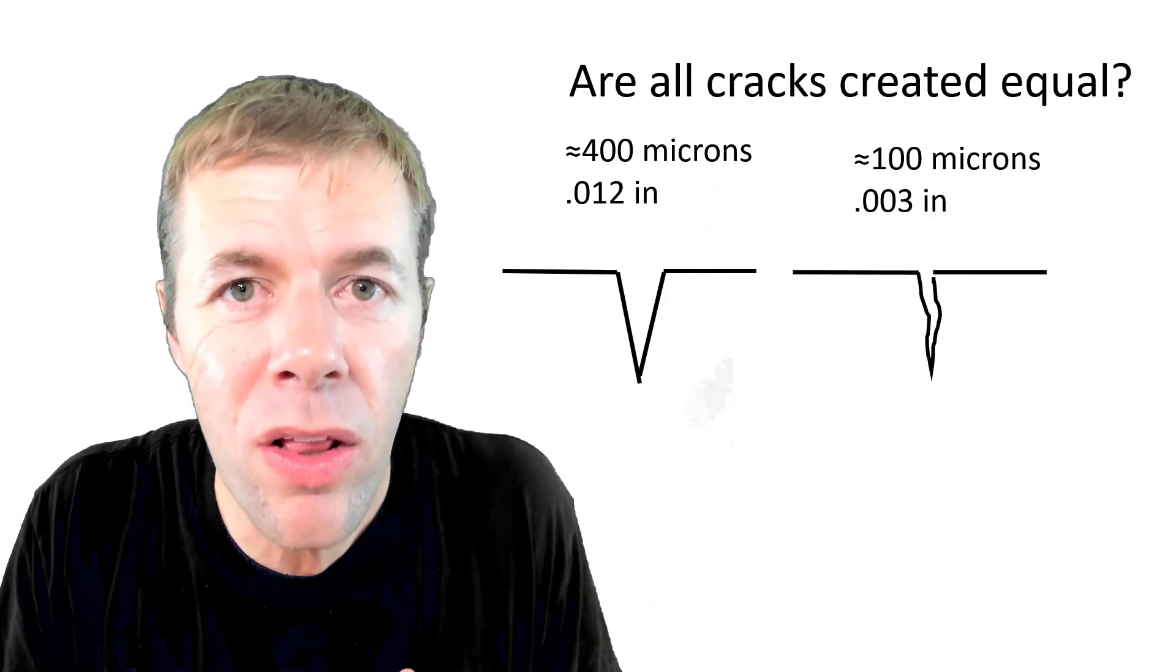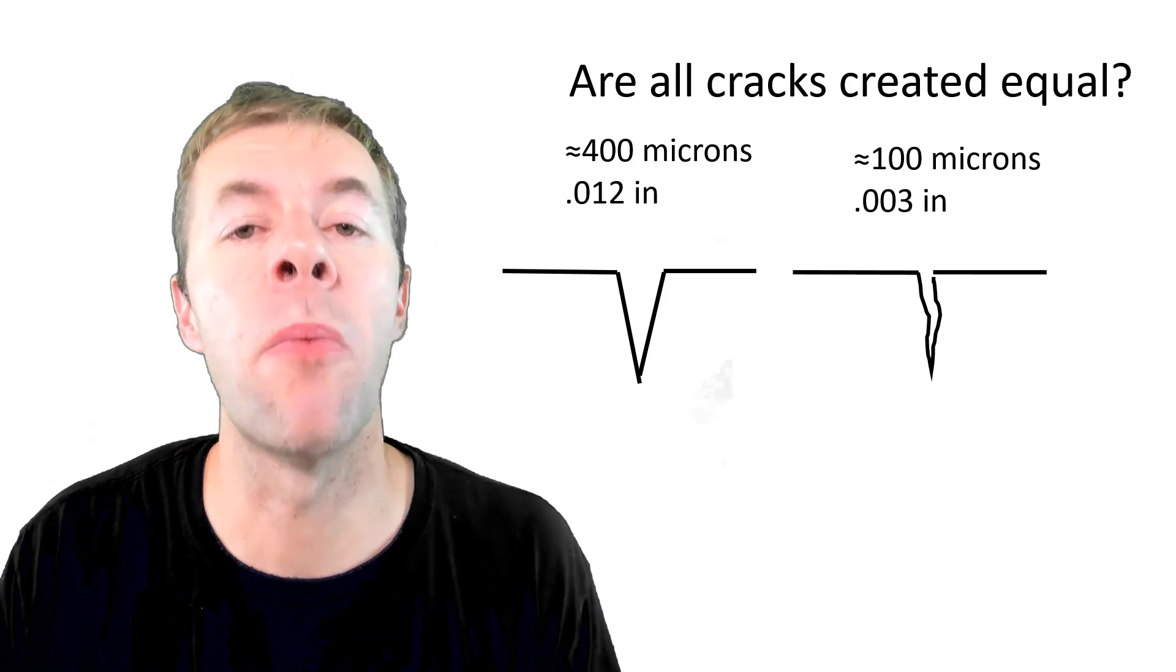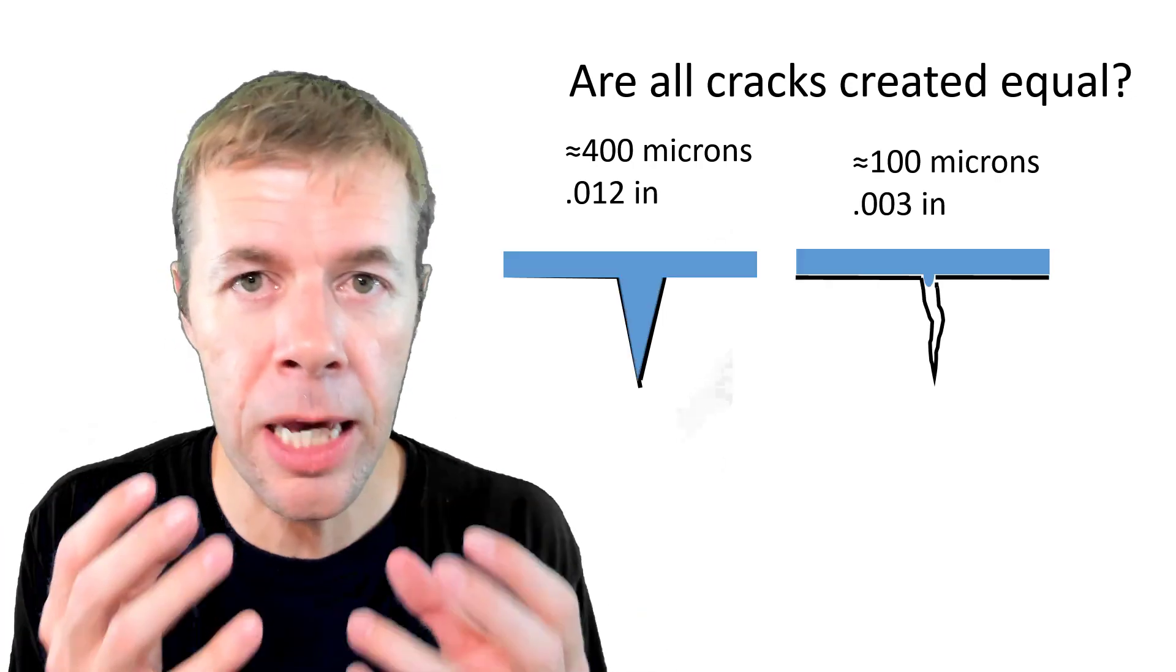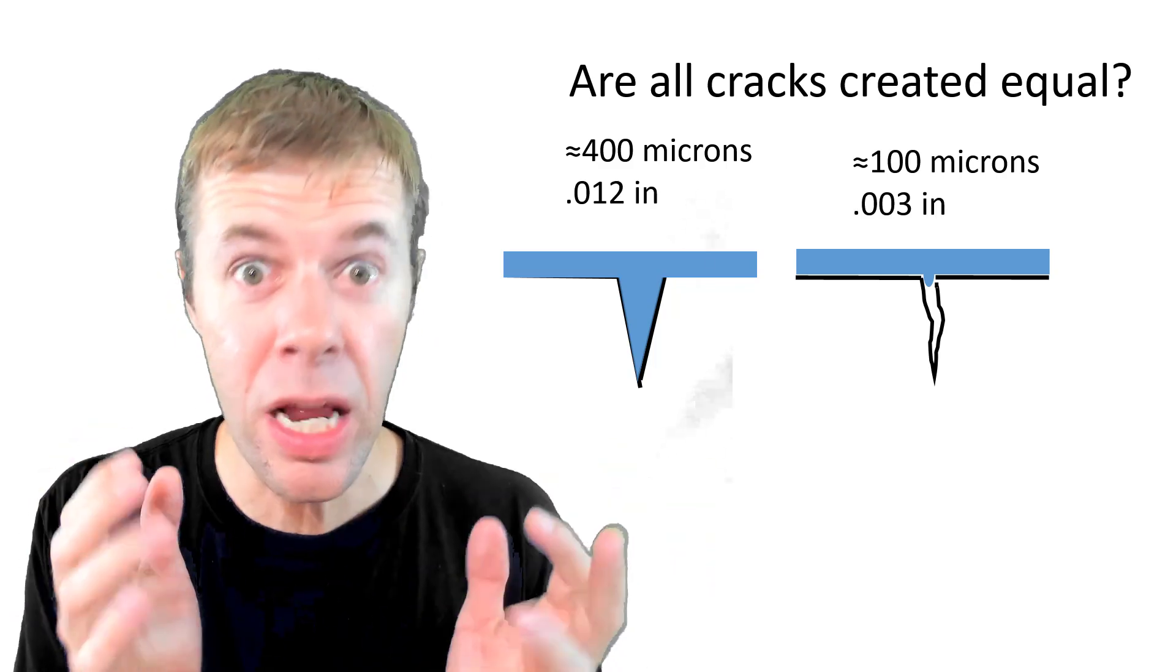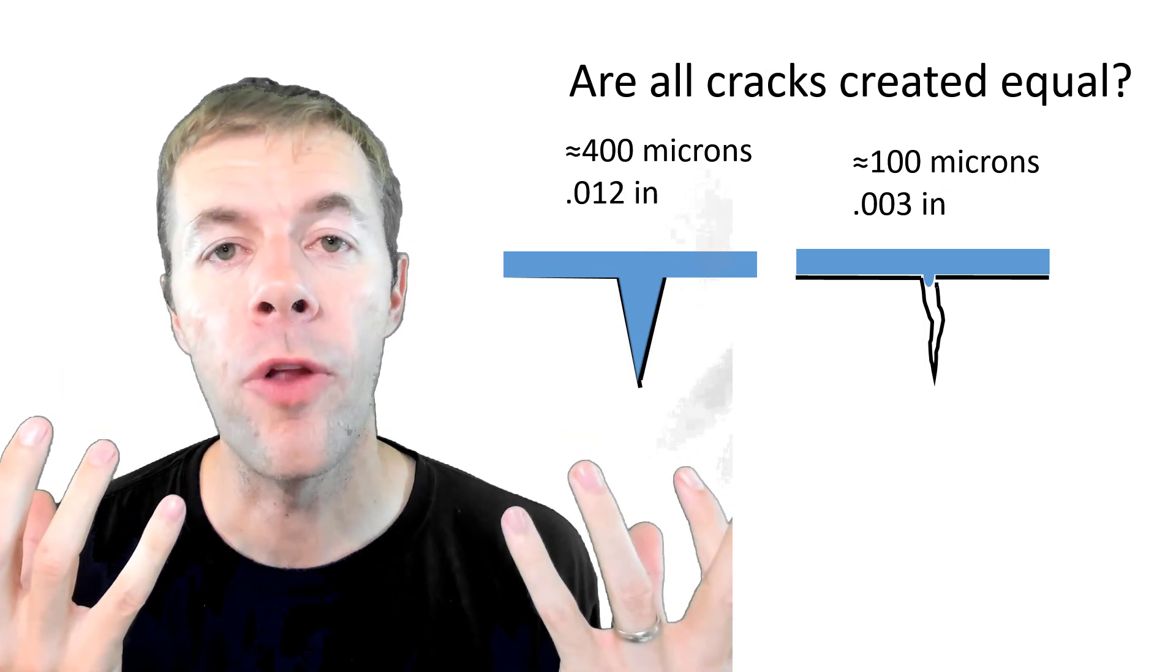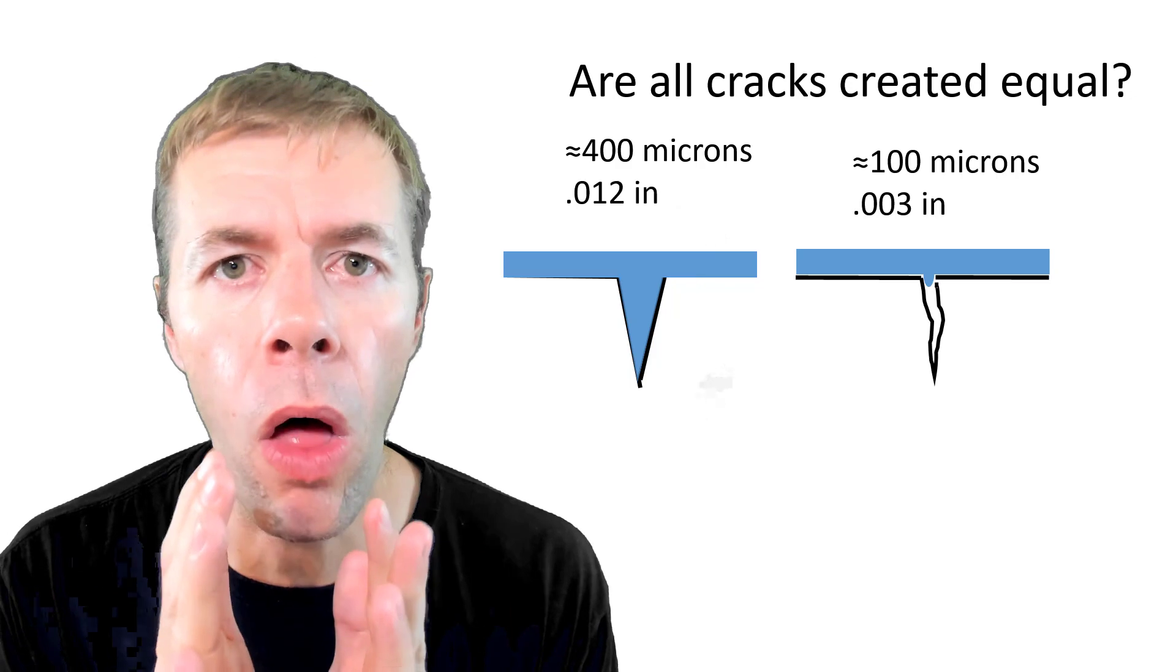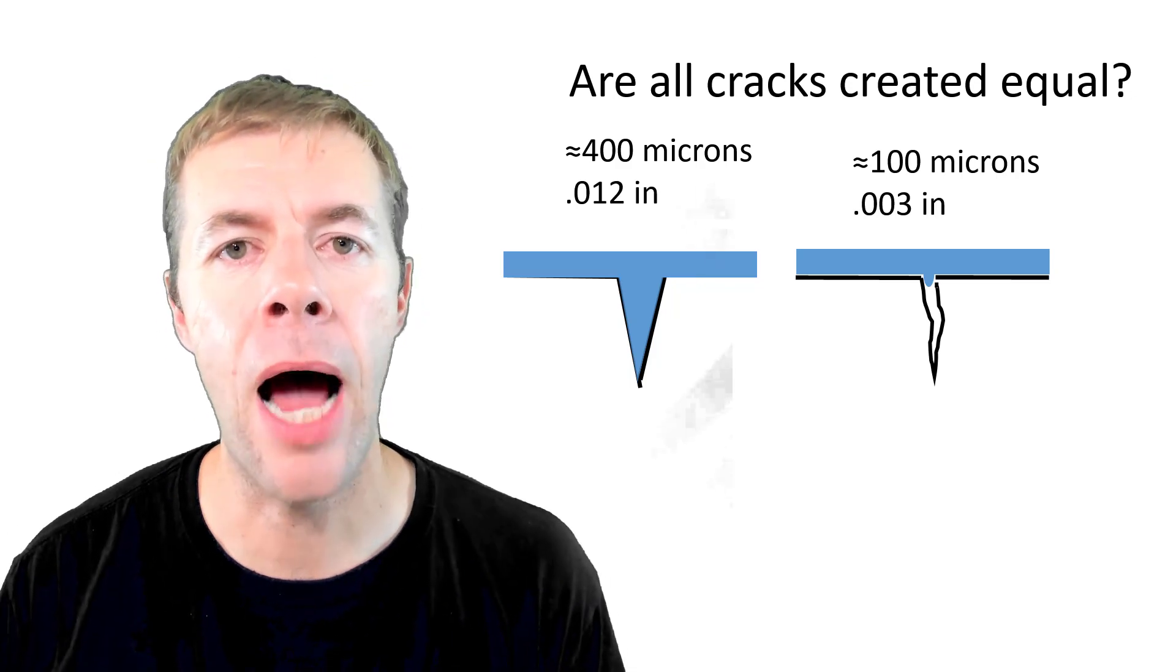So to answer this question, are all cracks created equal? We have to think about what these cracks look like. The one on the left is pretty big. The one on the right is kind of small. So when outside chemicals try to penetrate it, the big one, it just goes flowing in. There's nothing holding it back. But the one on the right, because the crack is small, something different happens.